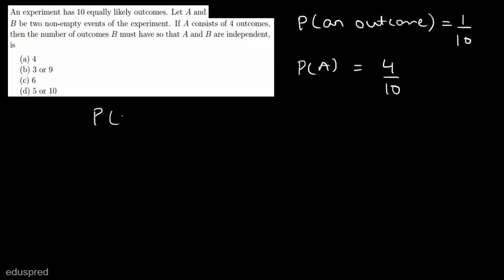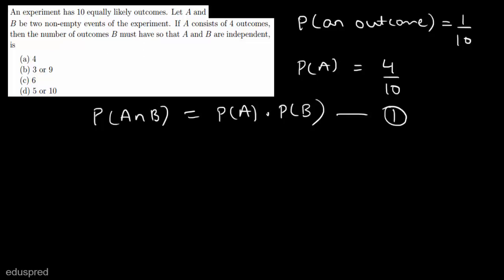This means that the probability of A is equal to 4 divided by 10. Now, if A and B are independent, then we know that the probability of A intersection B should be equal to the probability of A multiplied by the probability of B. We have to find the number of outcomes B must have so that this equation holds. We cannot do much with this equation directly, so we are going to look at the options provided and test them one by one.